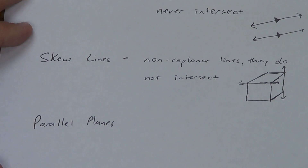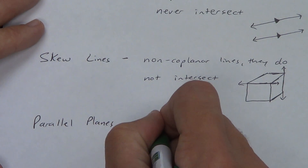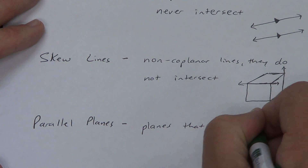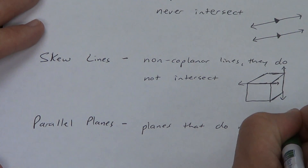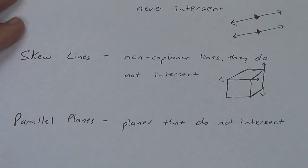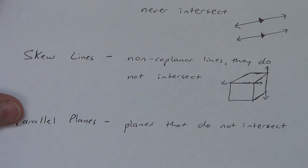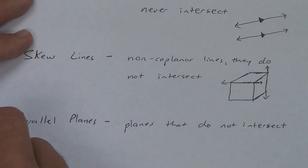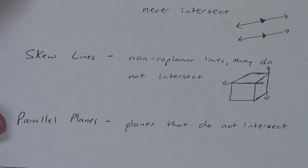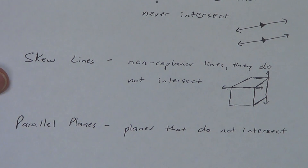Let's talk parallel planes. We've actually already talked about parallel planes in some other lessons, but these would be planes that do not intersect. Examples of this we've given are like the floor and the ceiling, or the front wall and the back wall of a room. There is no such thing as skew planes. So that's three terms that you need to know.